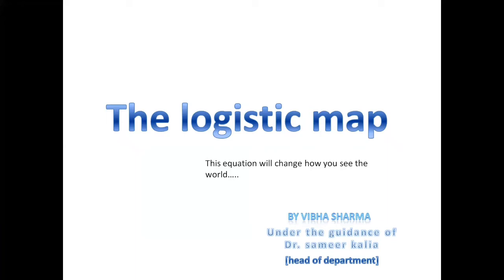My name is Vipha Sharma and my topic is the logistic map. What's the connection between a population of rabbits, the Mandelbrot set, dripping tap, thermal convection in a fluid and the firing of neurons in your brain? It's this one simple equation, the logistic map, and this equation will change how you see the world.